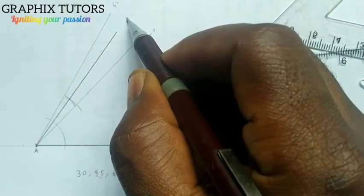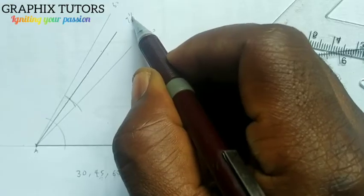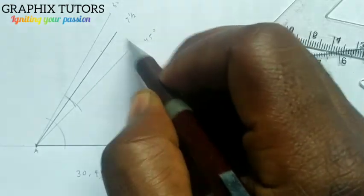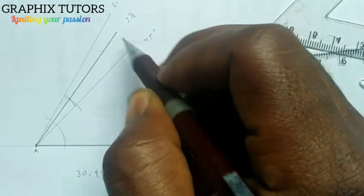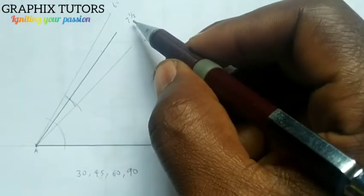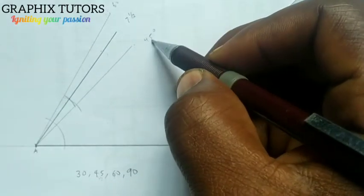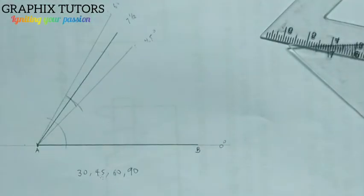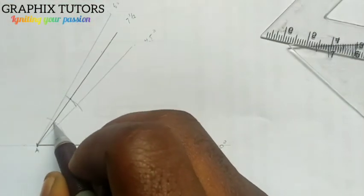So we have seven and a half here in between, because from here to here is 15 degrees. So when you bisect 15 degrees you're having seven and a half. Seven and a half plus 45 will give you 52 and a half. So it means that the angle between here and here is 52 and a half.